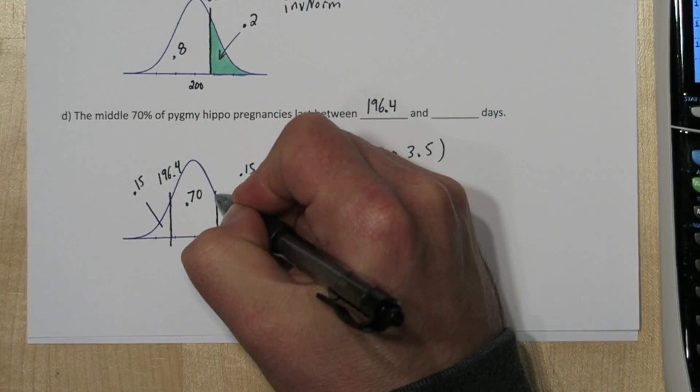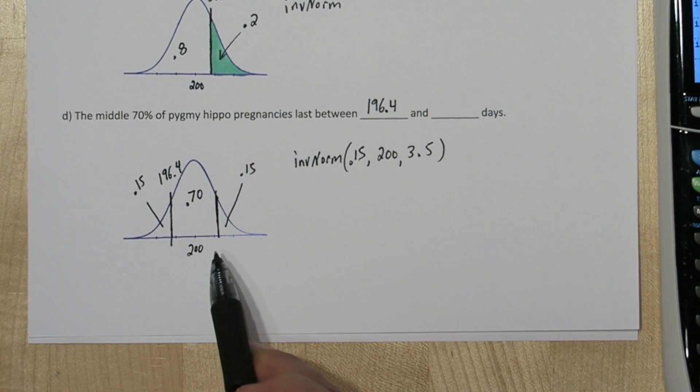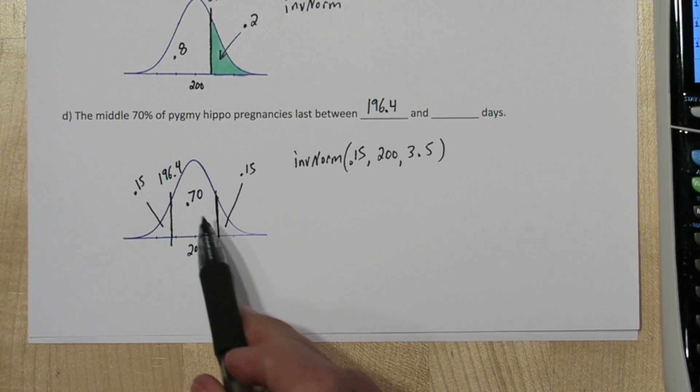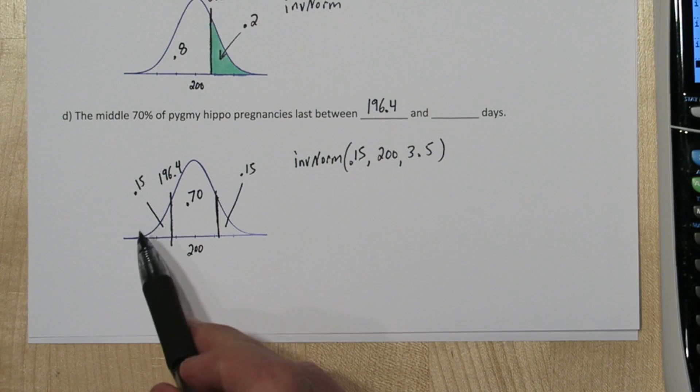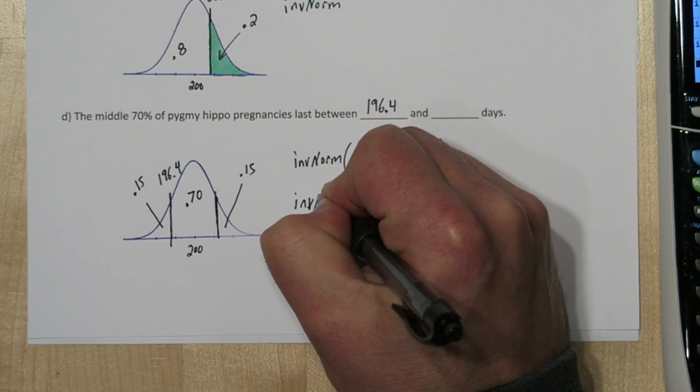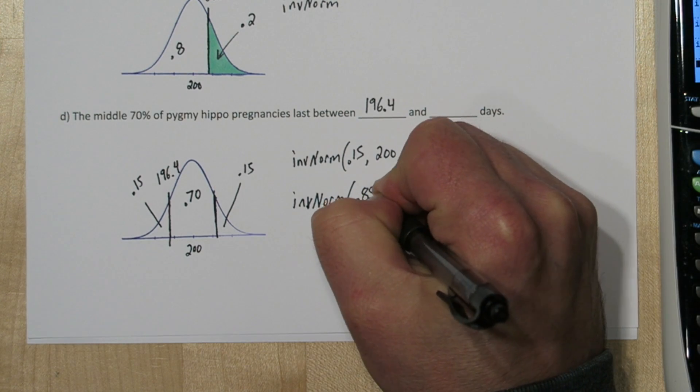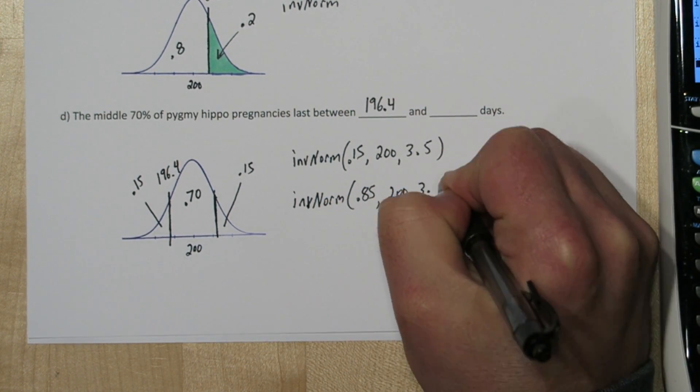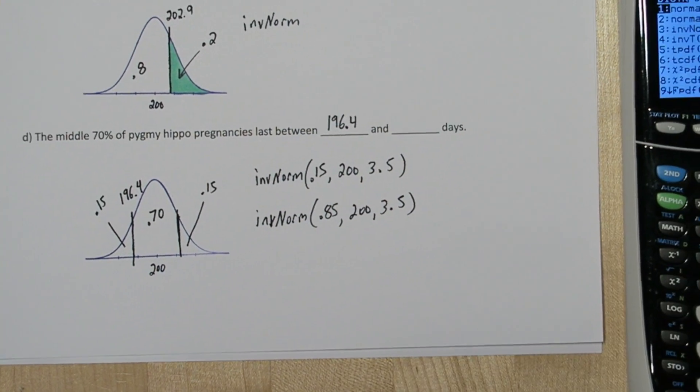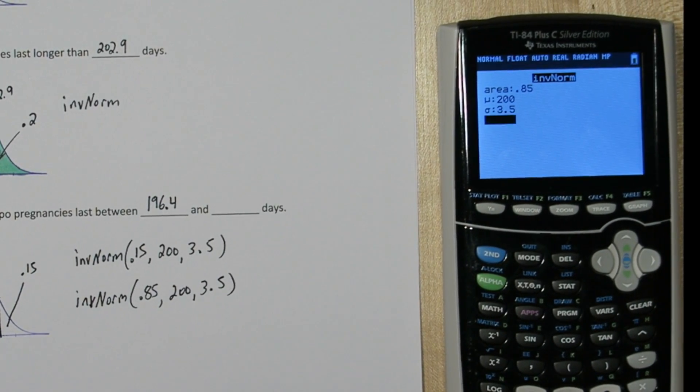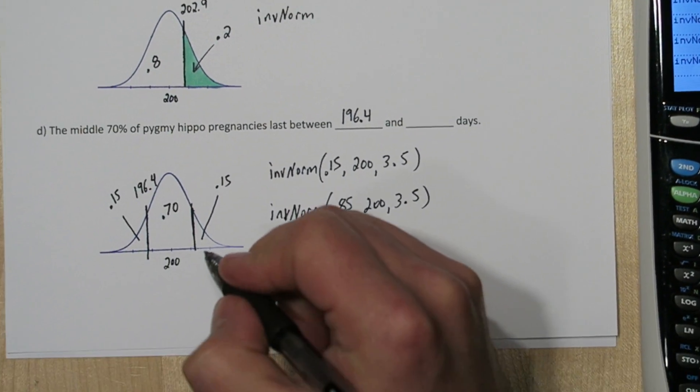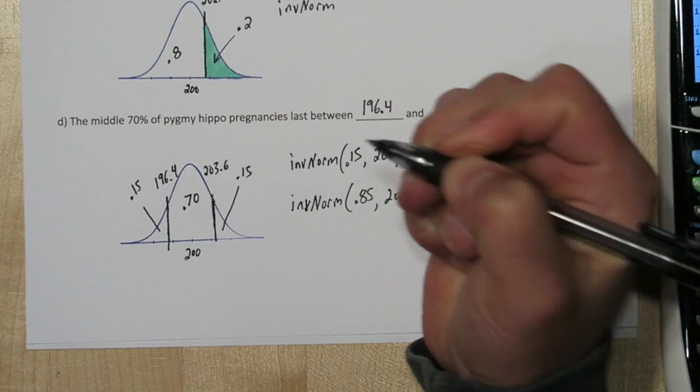Now for this upper cutoff value right here. Remember we're putting the area to the left. So that's this 70% middle plus the 15% in this left tail. So we're going to have to do inverse norm 0.85 with our mean and standard deviation. So our upper cutoff is about 203.6.